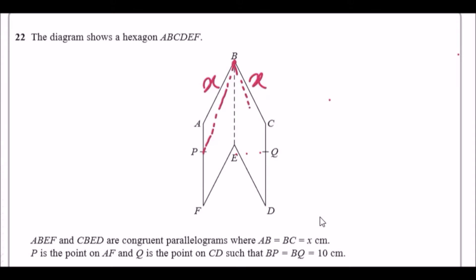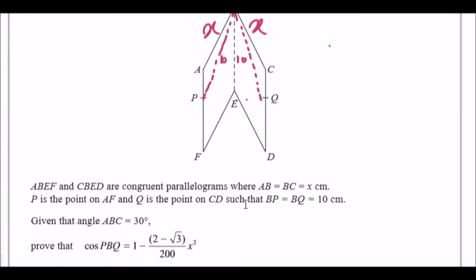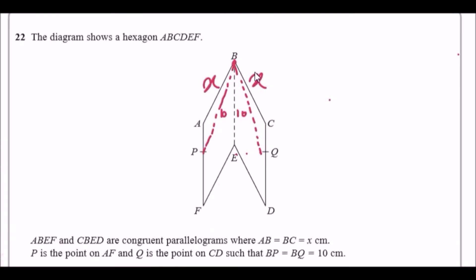Given that angle ABC is 30 degrees, prove that you can make cosine PBQ. So between the triangle PBQ. I'll tell you a very easy way.